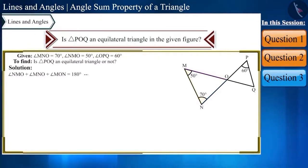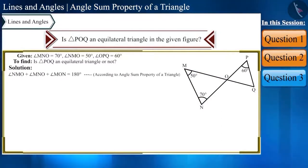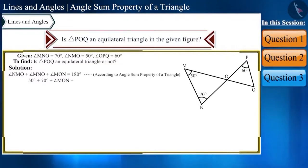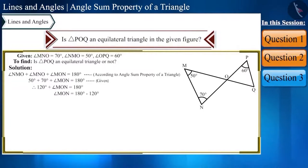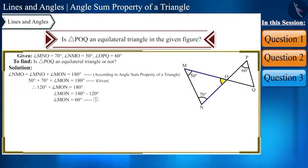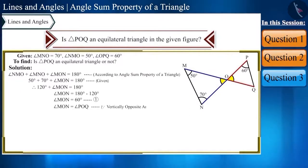Substituting the given values: 50 degrees plus 70 degrees plus angle MON equals 180 degrees, so angle MON equals 60 degrees. Since angle MON and angle POQ are vertically opposite angles, angle POQ is also equal to 60 degrees.